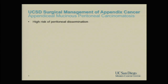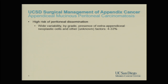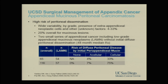Many mucinous tumors come in both types. Many non-mucinous carcinomas of the appendix are more like colon cancer and are more high-grade. Signet ring cell type is a high-grade variant. These tumors, particularly mucinous tumors — which most of my talk will focus on — are at very high risk of peritoneal dissemination. The risk is variable and determined by the grade of the tumor: high-grade, low-grade, or intermediate grade.